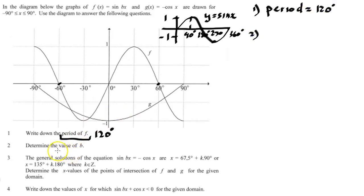Number 2, determine the value of b. Once again, b is a part of the graph of f(x). Now let's look at how can we find b. If I look at this graph, I'm given two turning points. One is here at -30 and -1. The other one is at 30 and 1.